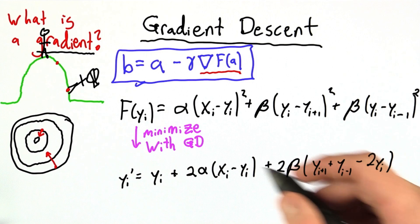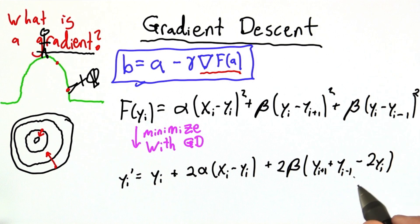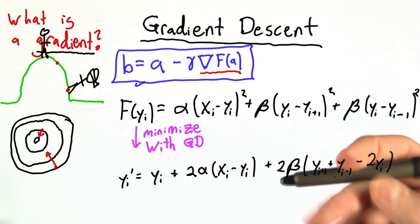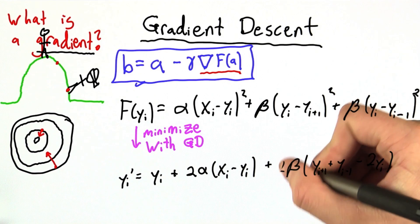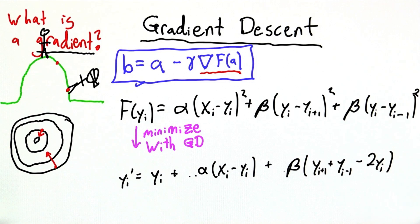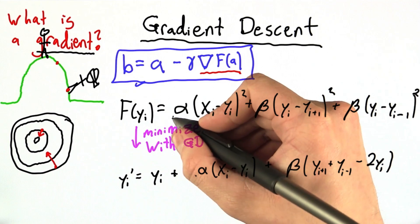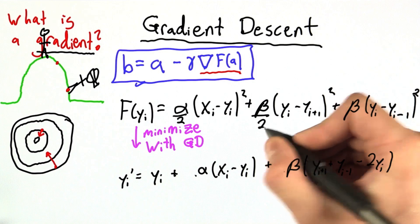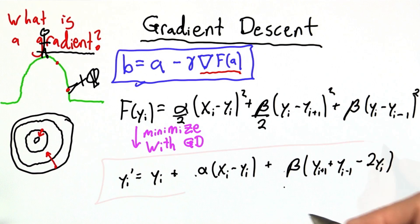And this almost, almost looks like the equation that you were given in class. There's a little problem, and that's these 2s. And I'm going to do something where I just erase them. And you may be saying, hey, you're not allowed to do that, but let's just pretend I had originally called these parameters alpha over 2 and beta over 2, and then everything will work out just fine.